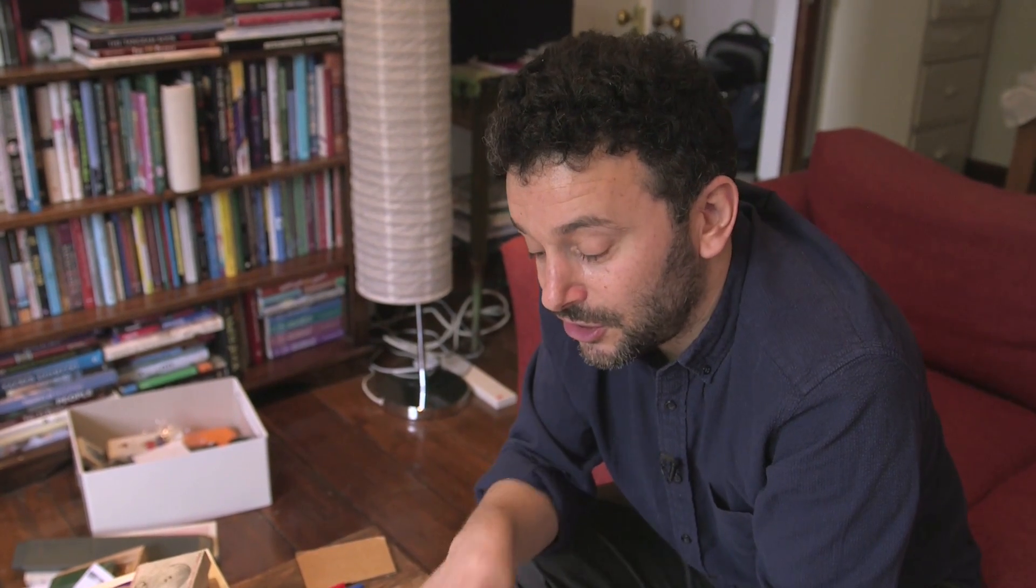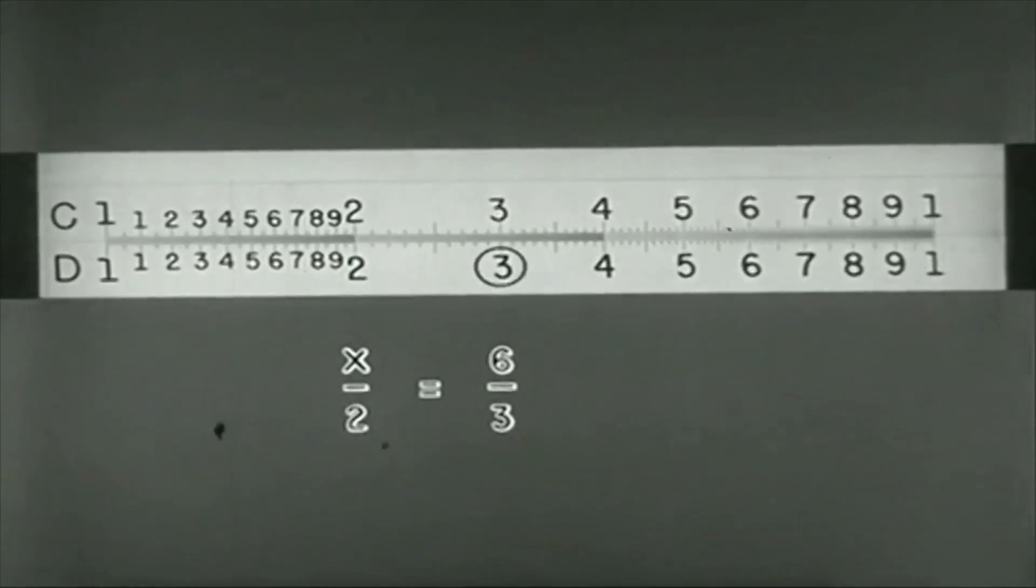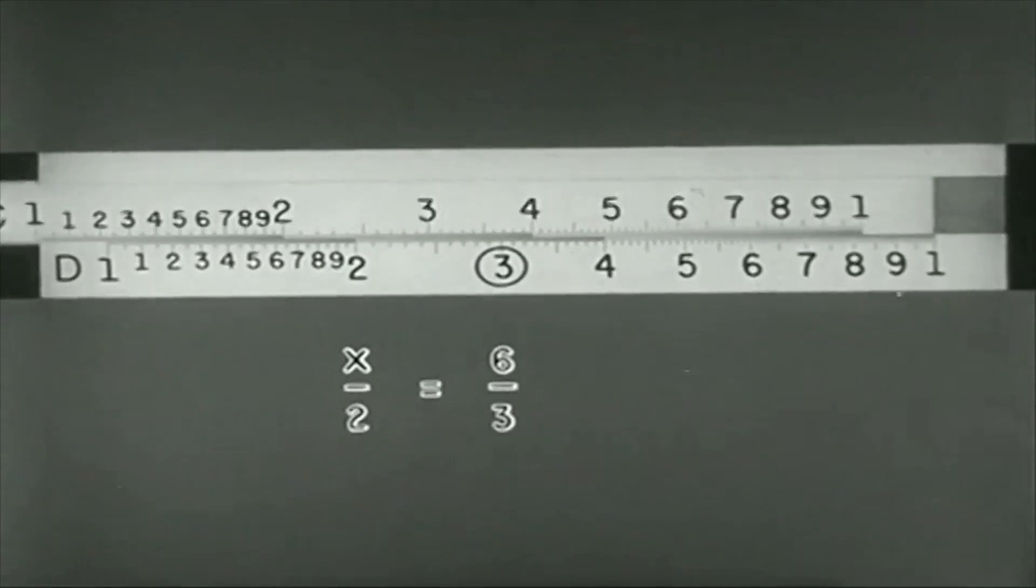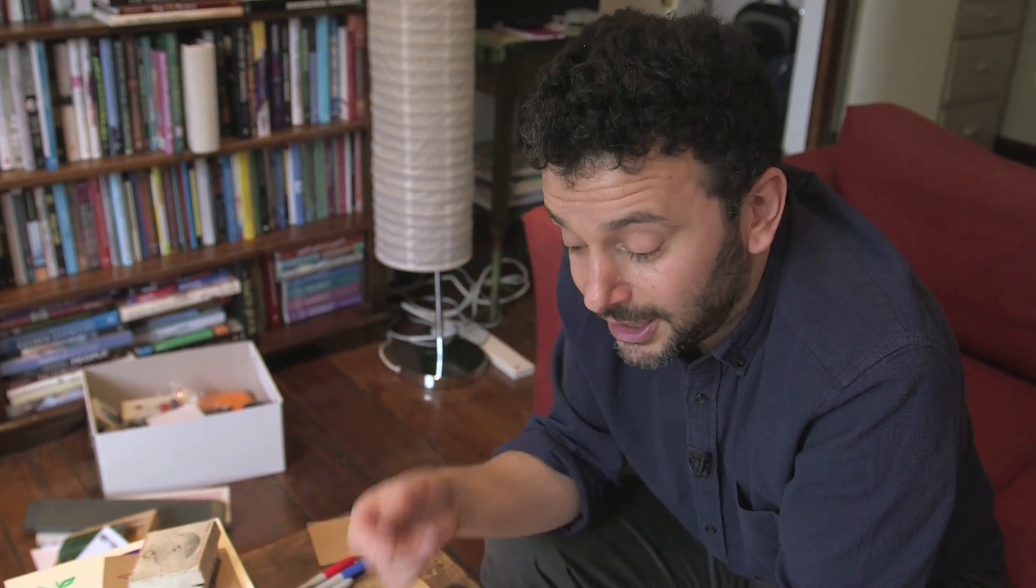What logarithms do, and what this is a physical interpretation of, is that they change multiplication into addition. So we're multiplying two things, but actually we're just adding two lengths. The reason why this is useful, obviously seven times seven we know that in our heads.